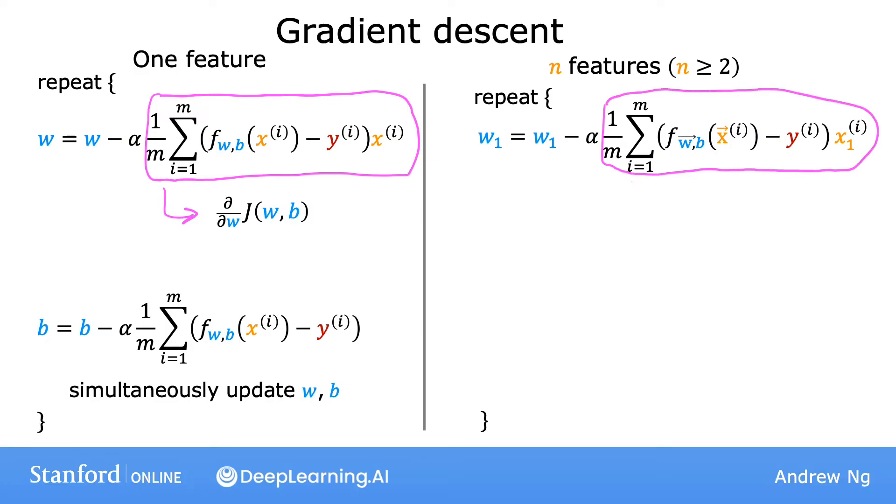And this formula is actually the derivative of the cost J with respect to w1. The formula for the derivative of J with respect to w1 on the right looks very similar to the case of one feature on the left.